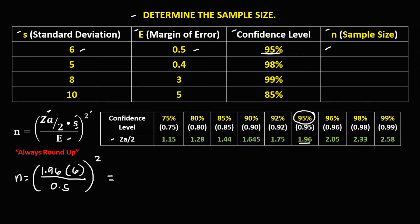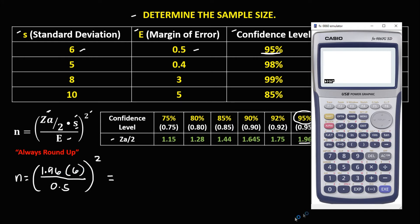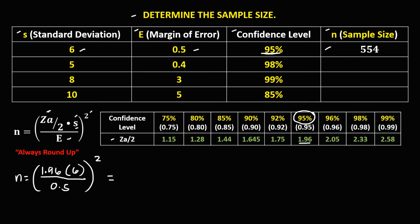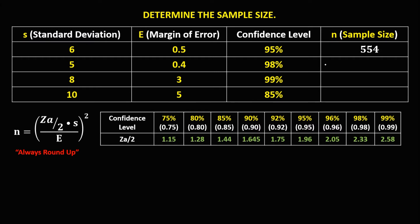To solve for the sample size: 1.96 times 6, divided by the margin of error 0.5, then to the power 2. The sample size is 553.1904. Since the sample size always rounds up, therefore the sample size is 554.